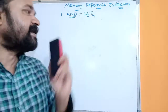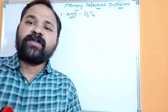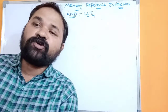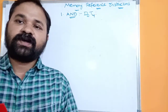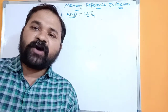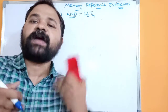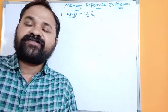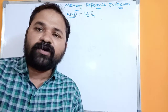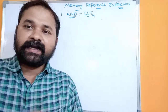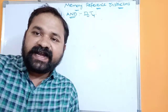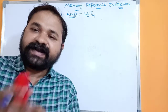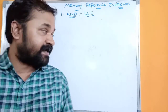AND means perform AND operation on the memory operand and the accumulator. But we can't directly perform AND operation on the memory operand, so we have to transfer the content of the memory operand to the data register. In the next clock pulse, the AND operation will be performed on the data register and accumulator.